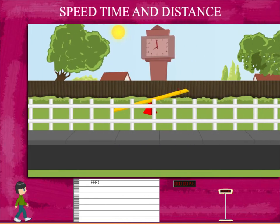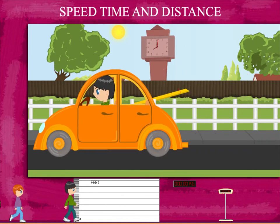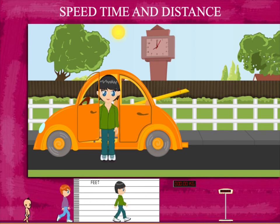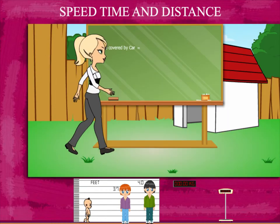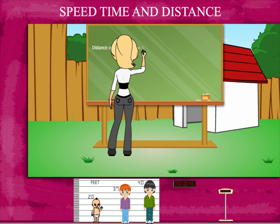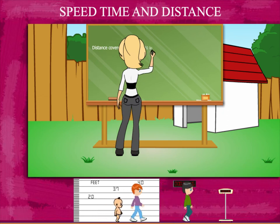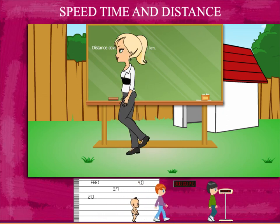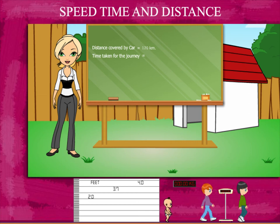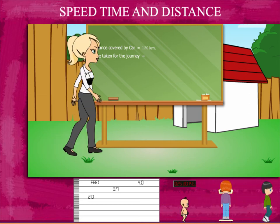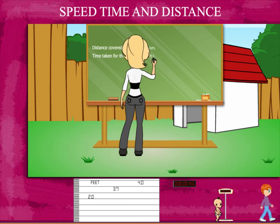Speed, Time and Distance. Judy drives his car to teacher Rosie's home. Rosie ma'am explains that Judy's car covered 120 km and he reached in 2 hours.